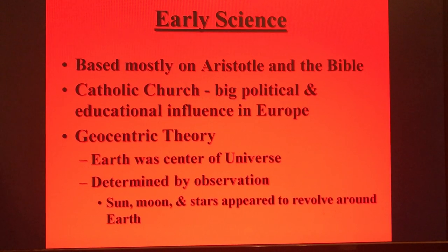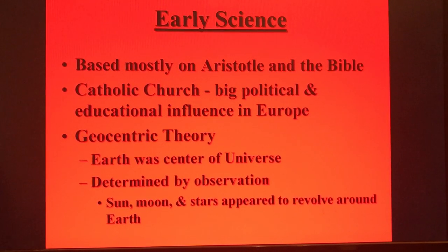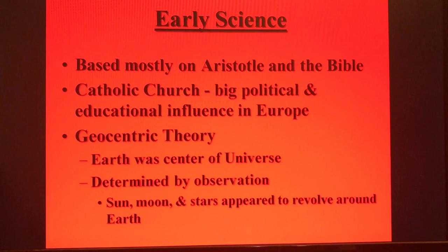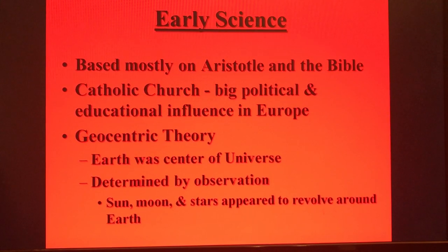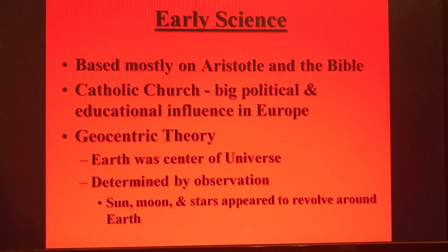We also had the geocentric theory at the time. Geocentric means the entire universe was earth-centered, meaning everything revolved around the earth. This was simply determined by observation — people looked up into the sky and it looked like things revolved around the earth. They had no way of measuring things outside of their own field of view, so the sun, the moon, the stars — everything viewable — seemed to revolve around them.